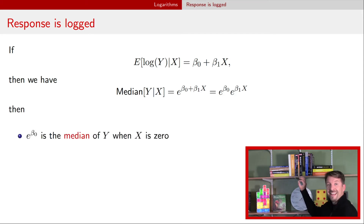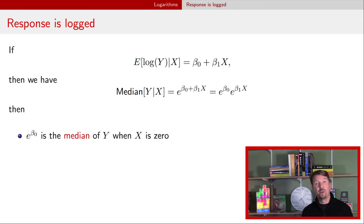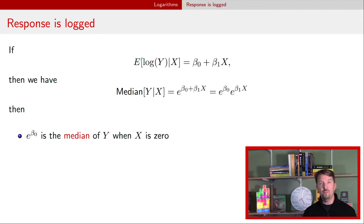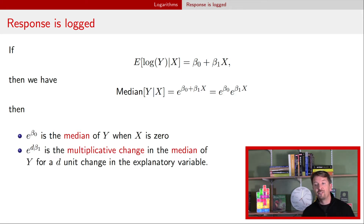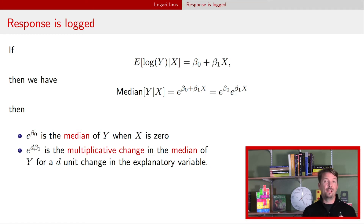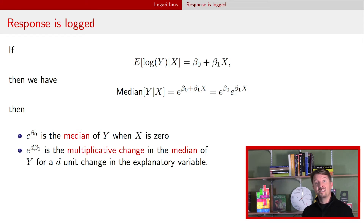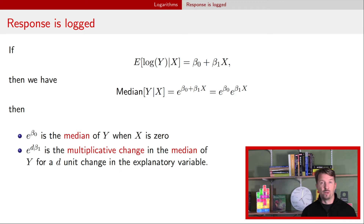If you stick in x equals zero, that second term goes away because e to the zero is one, so we're left with e to the beta naught. So e raised to the beta naught power is the median of the response when the explanatory variable is zero. If x increases by d, then there is an e raised to the d times beta one multiplicative change in the median of that response. It will be increasing if beta one is positive and decreasing if beta one is negative.